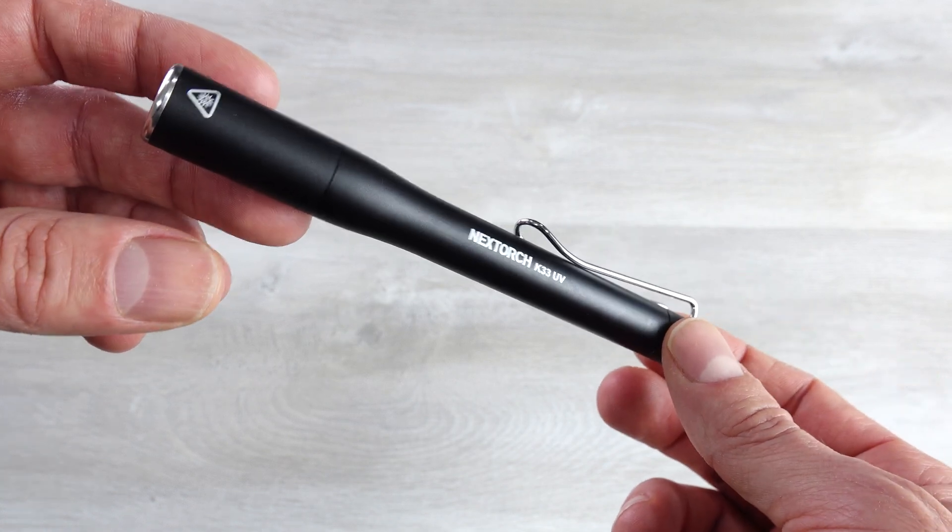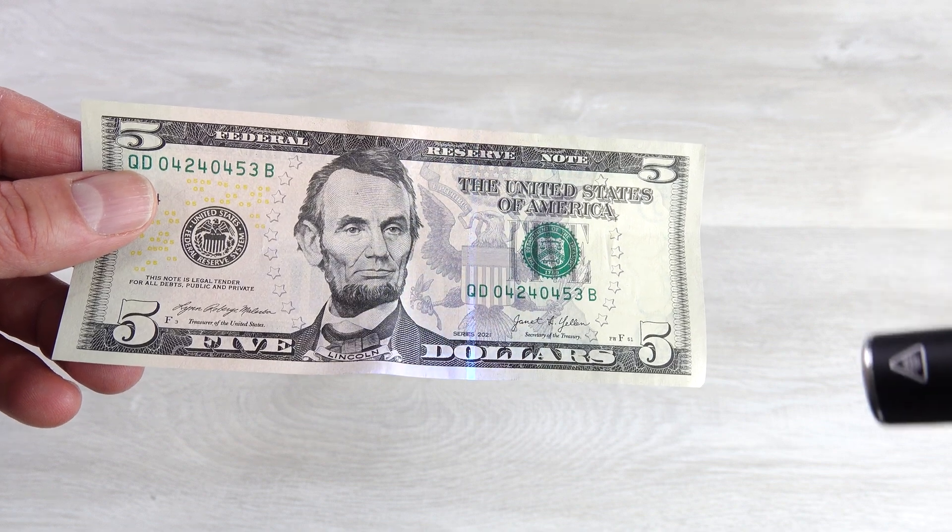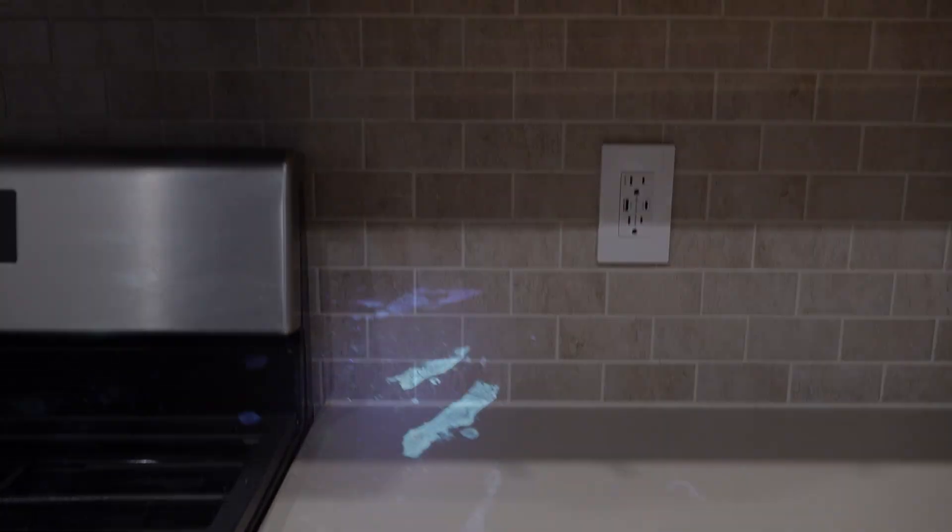This light is going to have a pretty narrow scope of use, useful for things like forensics investigators. You can verify real money with it by seeing the stripes in it. If you want to search for things around your house, like different fluids, or maybe you're going to a hotel and you want to see what things are clean.